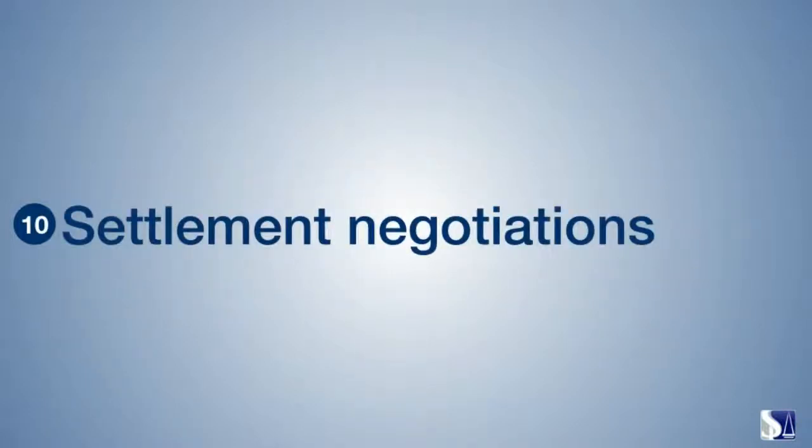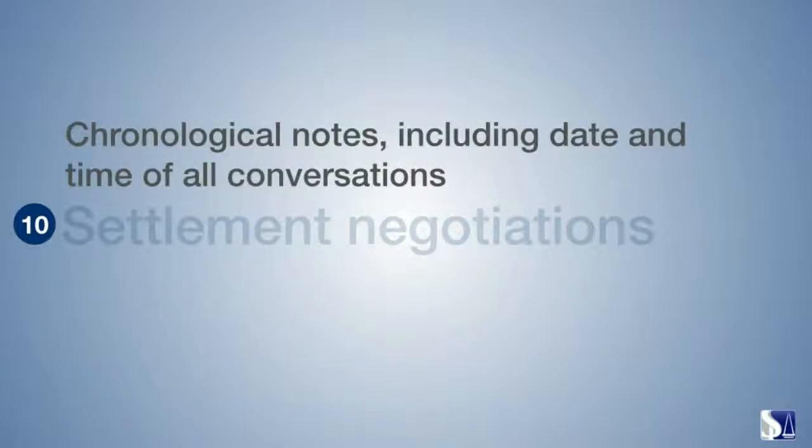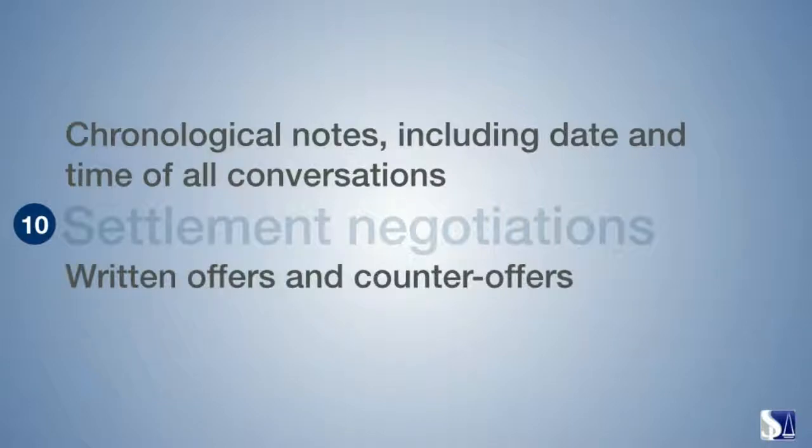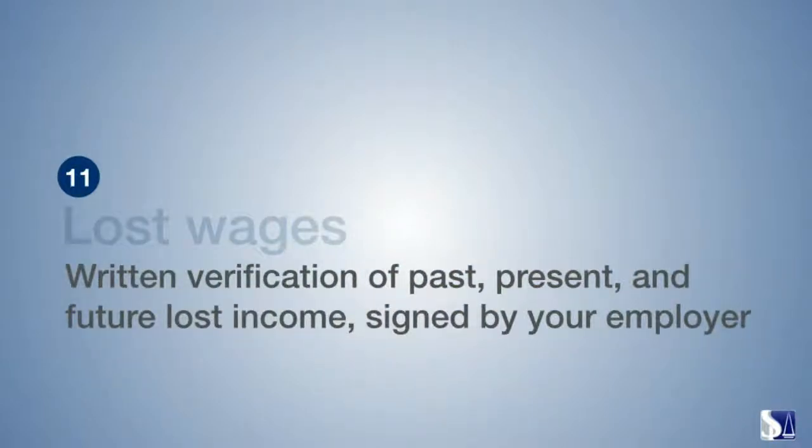Section 10, settlement negotiations, including chronological notes with date and time of all conversations with the adjuster. In this section you'll also have written offers and counter offers. Section 11, lost wages: written verification of past, present and future lost income, signed by your employer.